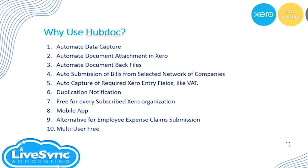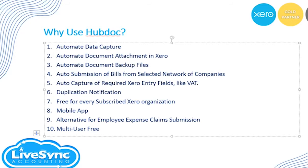Third is automated document backup. When submitting documents from different methods — email, mobile app, or upload — HubDoc allows you to connect with Google Drive, Box, or OneDrive to back up all files submitted to HubDoc. The same documents processed in HubDoc are duplicated to your chosen cloud storage.